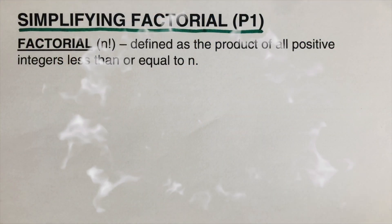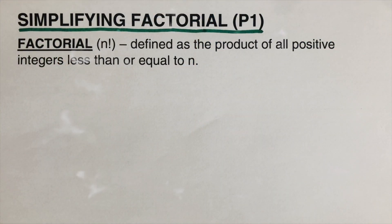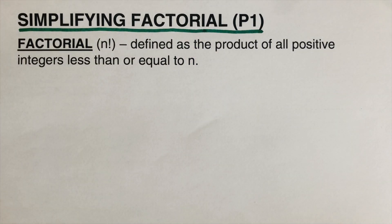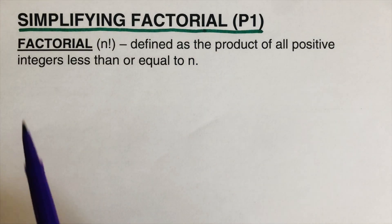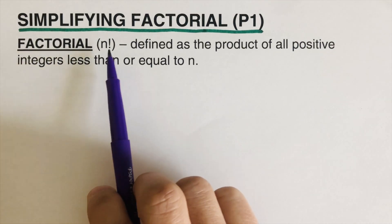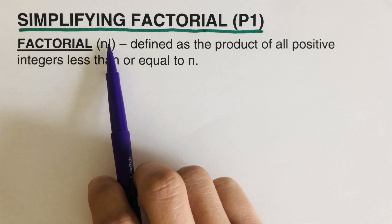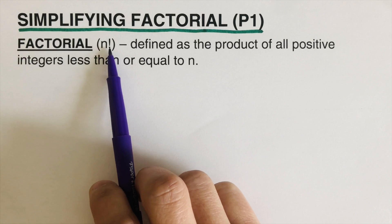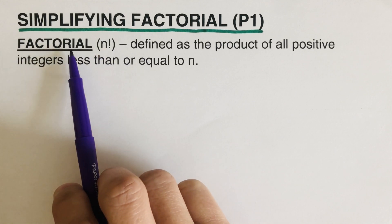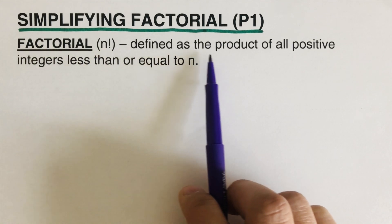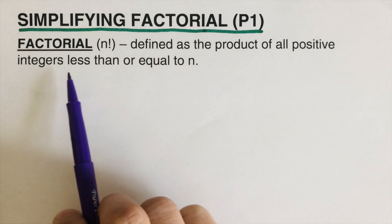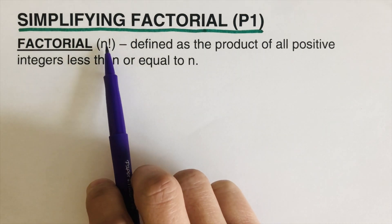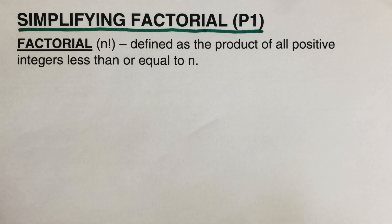Hello everyone, today we will be simplifying factorials — this is part one, and I will put the link to part two in the description box below. Factorial is represented by the letter n with an exclamation mark. Factorial is defined as the product of all positive integers less than or equal to n.